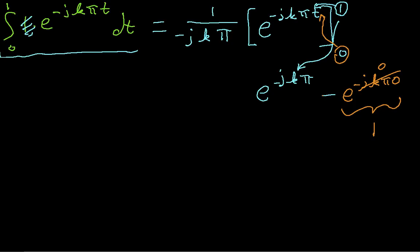I can combine these two together, and I get 1 over minus J K pi times E to the minus J K pi minus 1. And you're saying, all right, that was great fun. We're done. Well, we are sort of done, but it turns out that there's a lot more we can figure out about this before we say we're done. However, before we do that, we need to go back and work the second term.